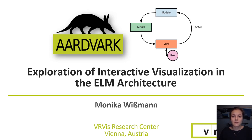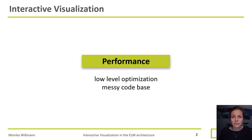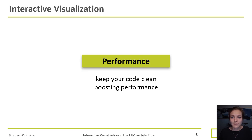The nice thing about interactive visualization is that the user has the ability to adapt the displayed data and the output to their needs. But one challenge that comes with interactivity is that changes have to be immediately seen in the displayed data, so we need really good performance. To achieve better performance often means low-level optimization, which is usually rather hard to achieve and often messes with your code base. We want to show you how you can implement your code in a nice clean way and also boost your performance without changing much of this code.